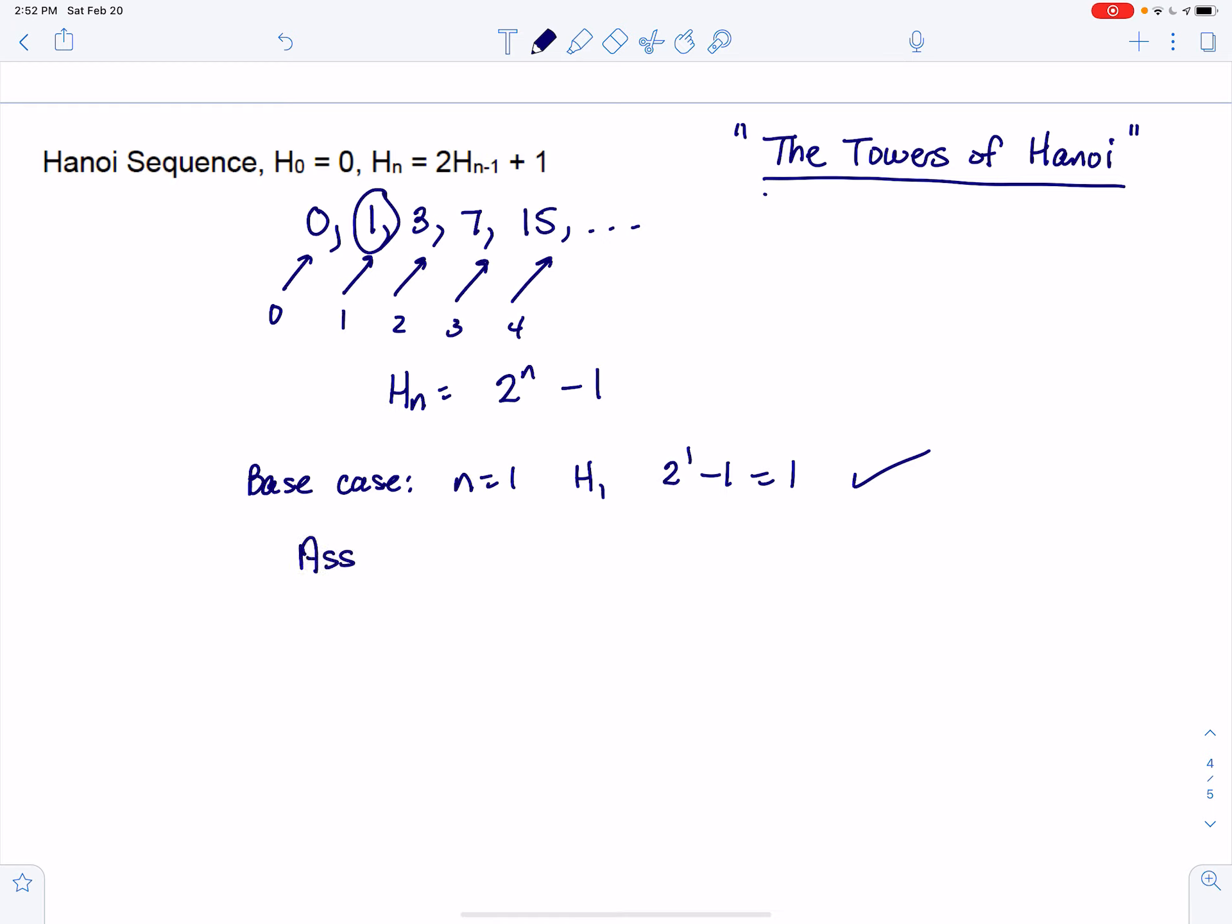So now we're going to assume, and again, since the sequence is written in terms of n and n minus 1, I'm going to assume that H of K minus 1 is equal to 2 to the K minus 1 minus 1.